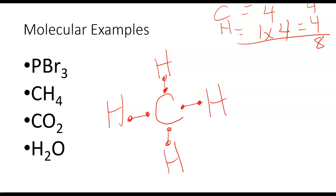And I check my octets, carbon here has 1, 2, 3, 4, 5, 6, 7, 8. Each of the hydrogens, remember hydrogen only needs 2, it's got 1, 2, that's good, 1, 2, 1, 2, 1, 2.